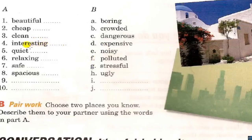Number 4: Interesting — opposite: Boring. Answer: A. Number 5: Quiet — opposite: Noisy. Answer: E. Number 6: Relaxing — opposite: Stressful. Answer: G.